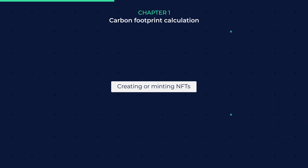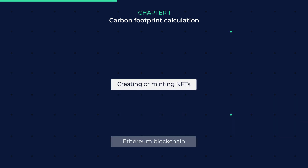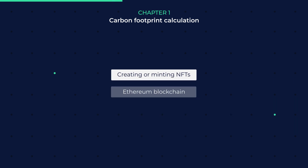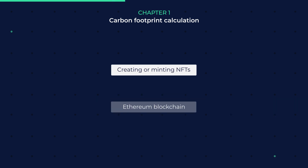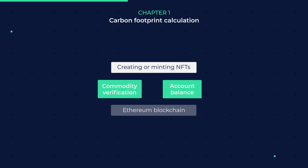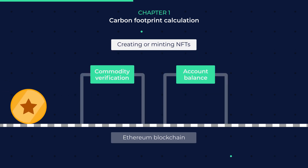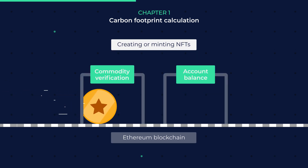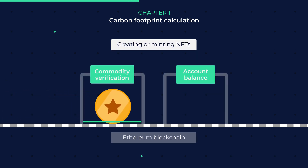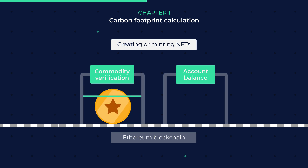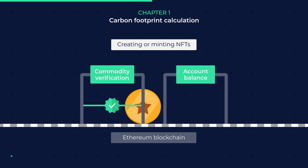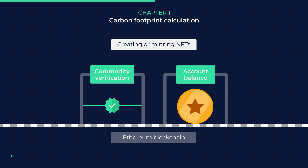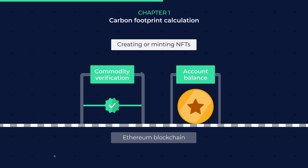Let's look at the process specifically for NFTs that use the Ethereum blockchain. A couple of things must happen to create or mint an NFT. First, at the moment of minting, the token must be verified as a commodity on the blockchain. Second, the account balance of the owner must be adjusted to reflect the addition of that commodity.